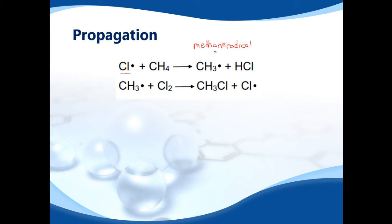How do we know it's a radical? Because it has the dot here. Remember, if you see a dot after something, it's a radical. So that's the methane radical. And you also get hydrogen chloride, HCl.